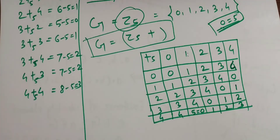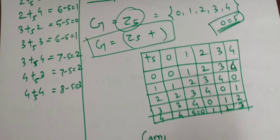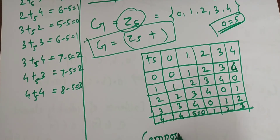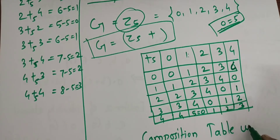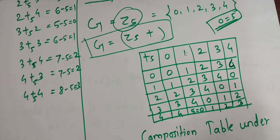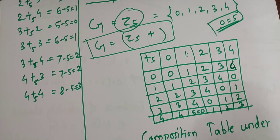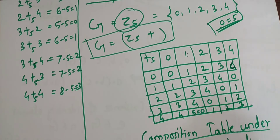So this is the composition table of Z5 under addition. In the next video we will see the composition table under multiplication, which is also easy. Thank you.